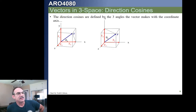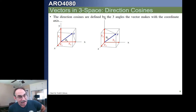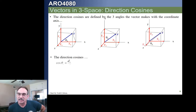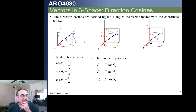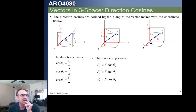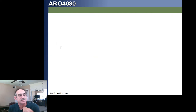Here's another way of saying the same thing. If we have a vector in 3-space, the angle it makes with the x-axis is shown in the first picture, the angle with the y-axis in the second, and with the z-axis in the third. The cosine of each angle is simply: cosine theta x equals dx over d, cosine theta y equals dy over d, and cosine theta z equals dz over d, where d is the total length. If that is a force vector, the x-component is just the magnitude of the force times cosine theta x.